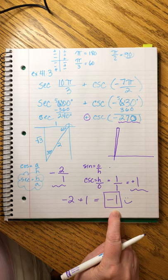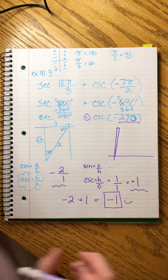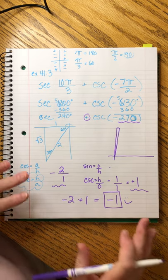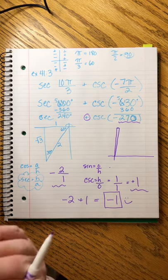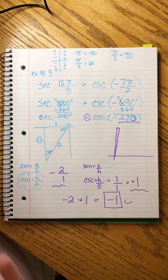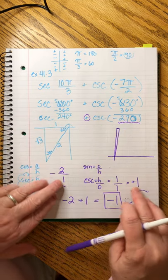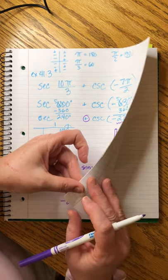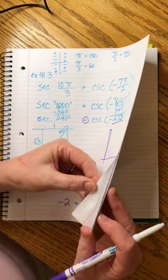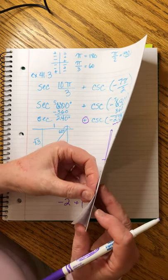Isn't it crazy that a problem as complicated as this can boil down to such a simple answer? What we're doing seems very valuable even though we don't yet understand exactly what the point of all this is. We're creating ratios and combining them.